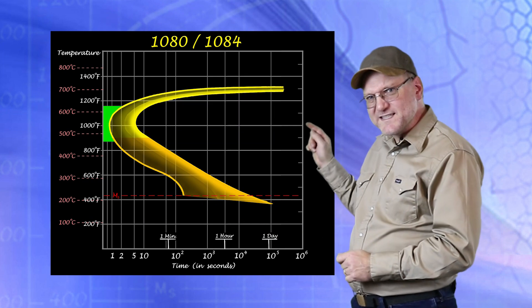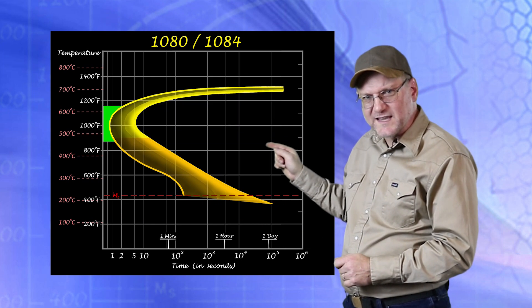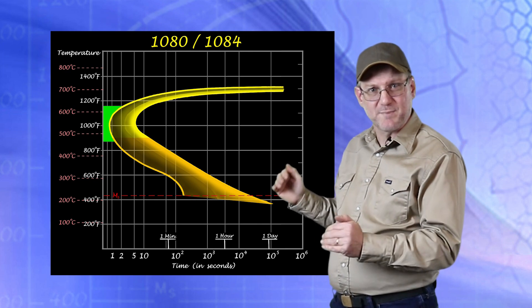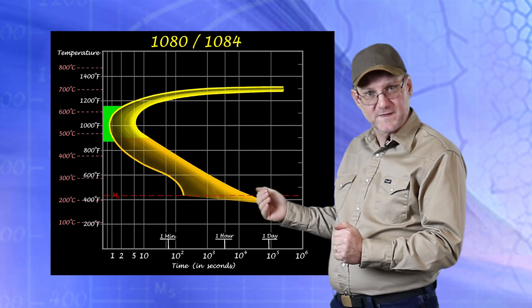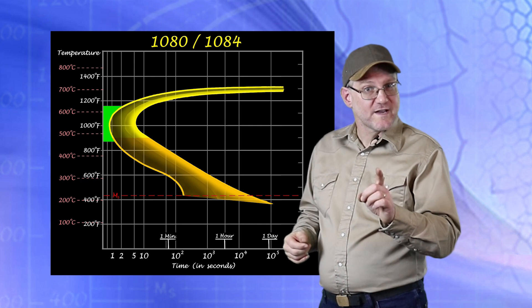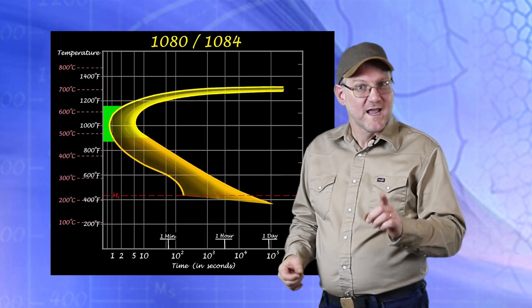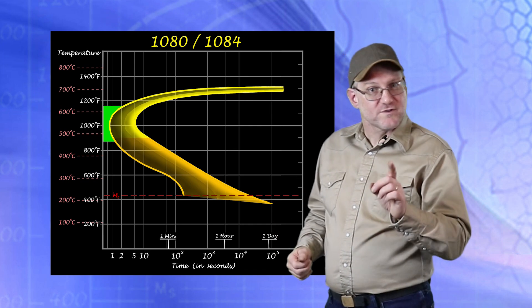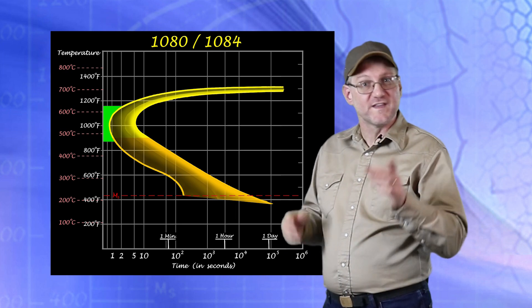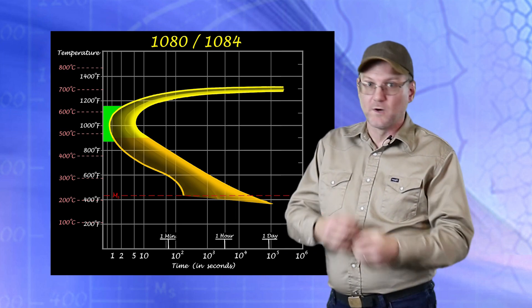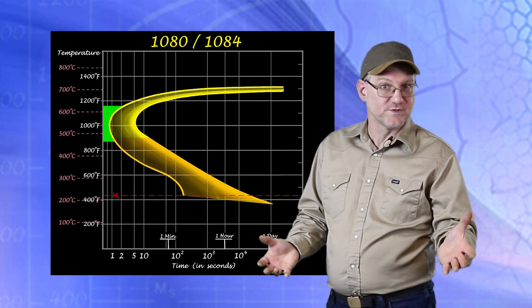The critical spot here is this narrow space between the left hand side of the chart and that pronounced part of the curve. This shows us where perlite formation is the fastest. Any perlite that is allowed to form here will be material that is soft and unhardenable, regardless of how fast it cools below this point.